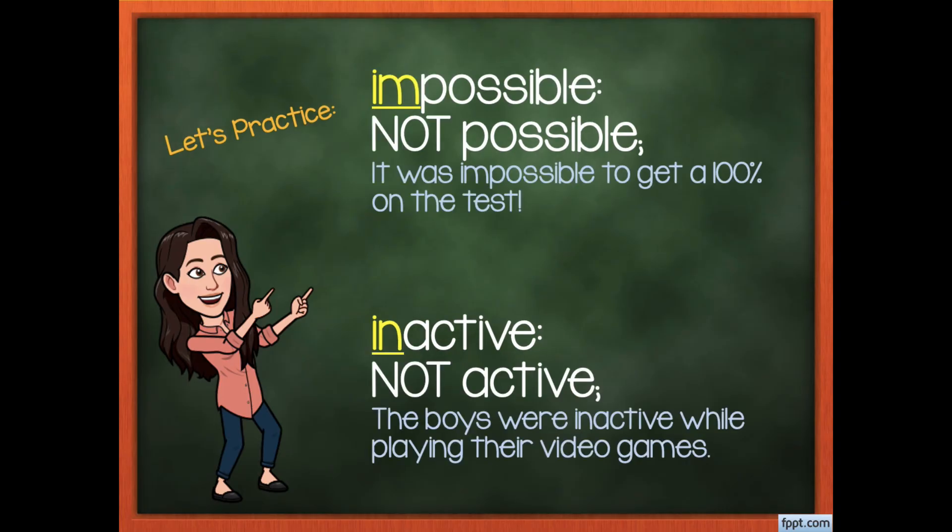All right, how did you do? So for the word impossible, you should have the definition not possible or not able to, because adding the prefix im- in front of possible changes it to mean not possible. The sentence that I used says it was impossible to get a 100% on the test. I'm sure your sentence was just as good.